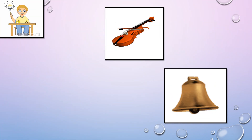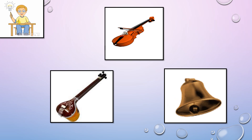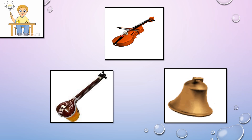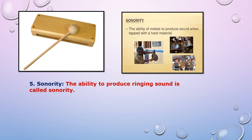Let's try this activity: Pluck the string of a musical instrument like a tanpura or veena, ring a bell, or hit a steel box with a metal spoon. We will observe that these instruments, made of metals, produce sound. Then strike a wooden bowl or marble floor with a wooden stick and note the difference in sound. The ability to produce a ringing sound is called sonority.